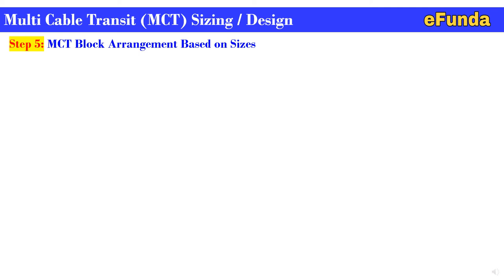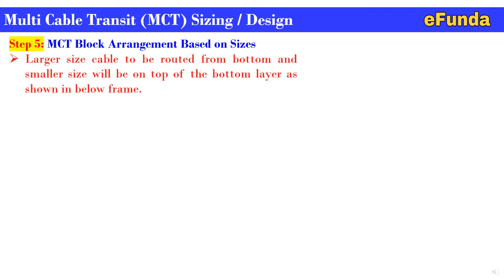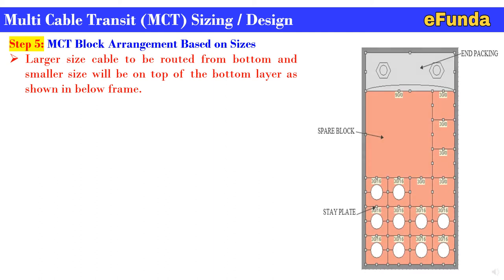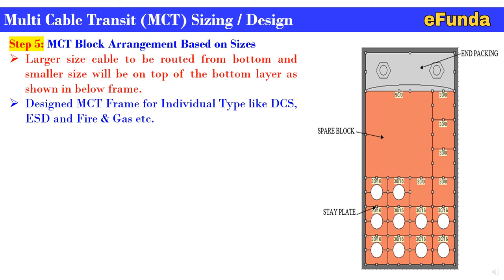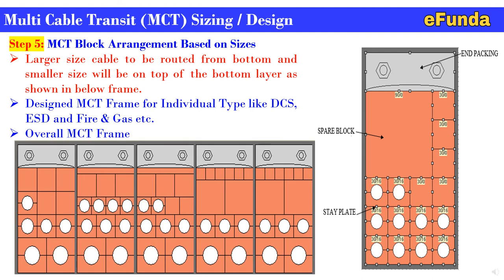Step 5: MCT block arrangement. Larger size cables are routed from the bottom and smaller sizes go on top of the bottom layer as shown in the frame. In the right-hand side figure, one can see the various arrangements — the highest block size is placed at the bottom to accommodate the largest cable, then stay plates are added, and sizes reduce upward with pair blocks inserted. Design the MCT frame individually for each system type — DCS, ESD, fire and gas detection, etc. An overall MCT frame view shows various single frames allowing all cables to pass through and enter the control room.